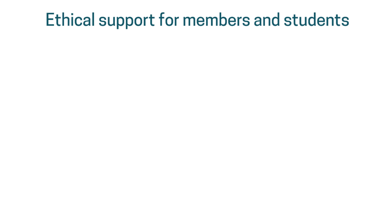The CIMA ethical code identifies five categories of common threats to its ethical principles. These threats are things which could put someone at risk of acting unethically. It's important that a professional accountant should evaluate any threats to compliance and deal with them in a professionally appropriate manner.